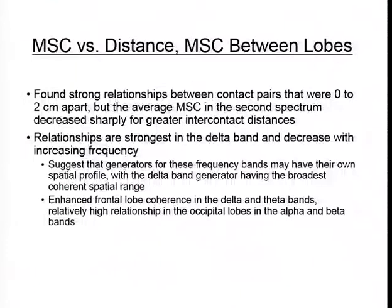To summarize: we see strong relationships between contact pairs zero to two centimeters apart, but average coherence decreases sharply in the second spectrum for greater intercontact distances. Relationships are strongest in the delta band and decrease with increasing frequency. This suggests that generators for different frequency bands may have their own spatial profile, with the delta band generator having the broadest coherent spatial range. We also see enhanced frontal lobe coherence in delta and theta bands, and relatively high relationship in occipital lobes in alpha and beta bands.